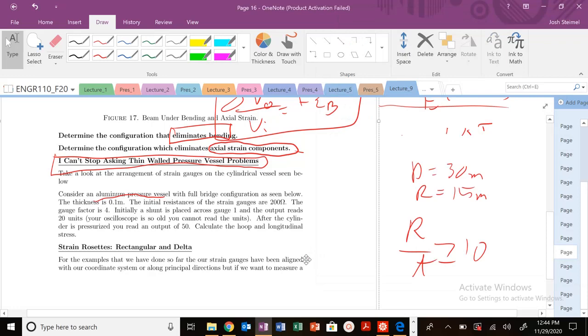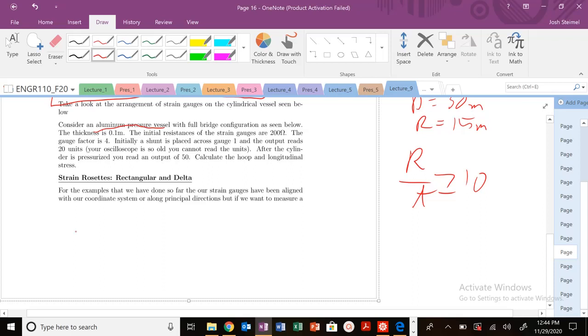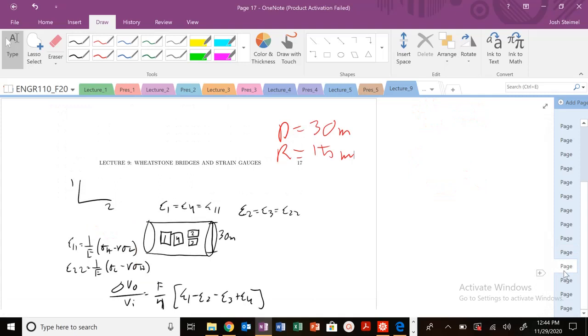Let's confirm that. R divided by T—definitely. Once we know that, once we have this thin-walled pressure vessel, we know that our stress tensor is going to be this. Let's look at our configuration.